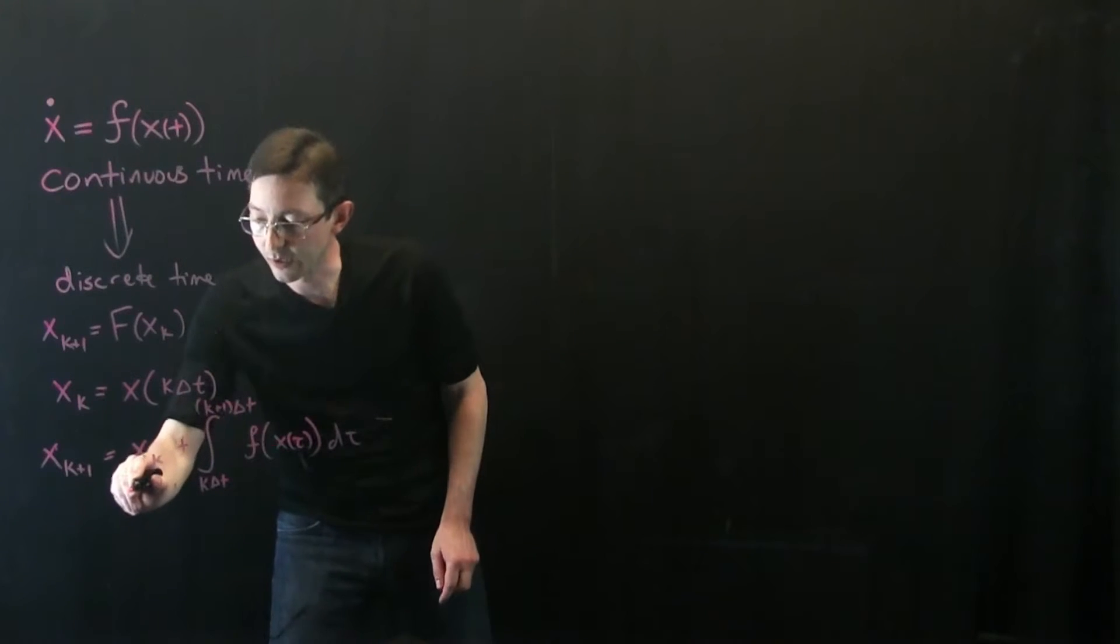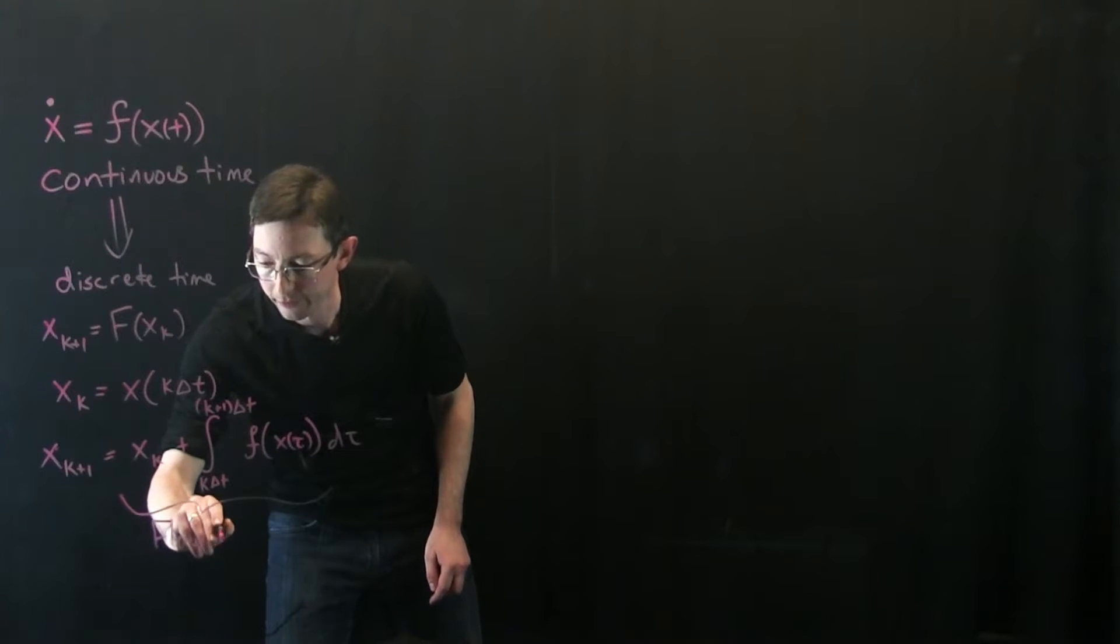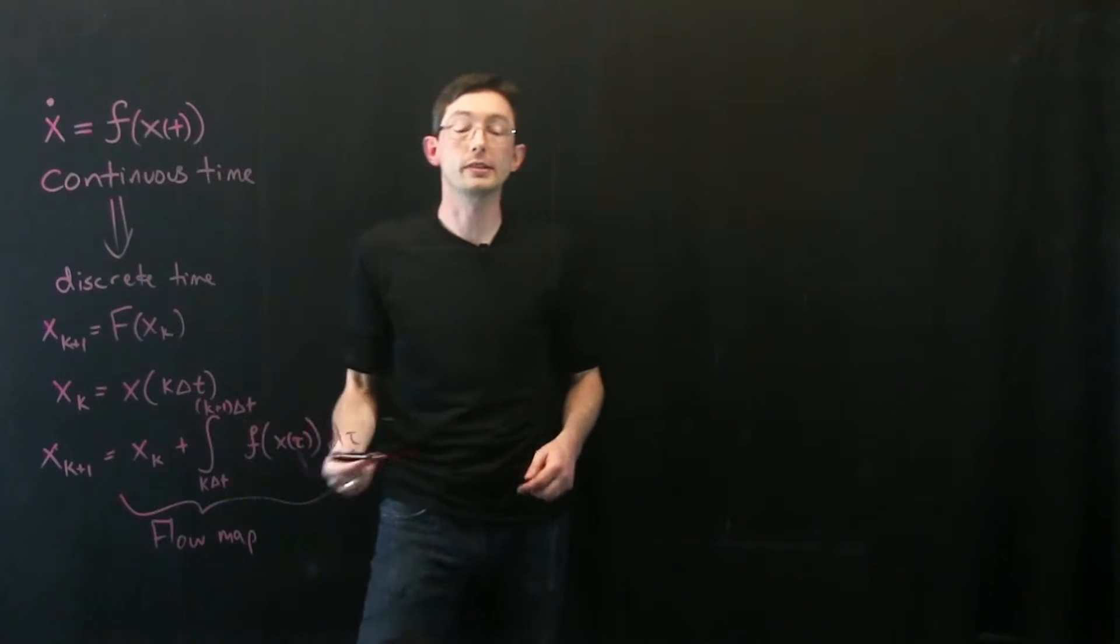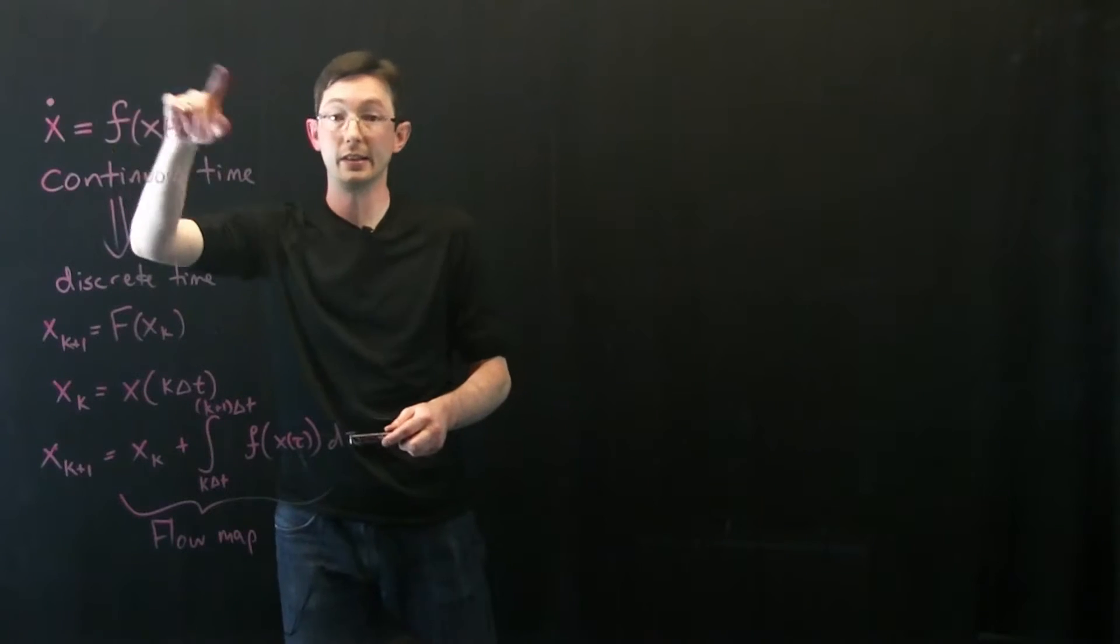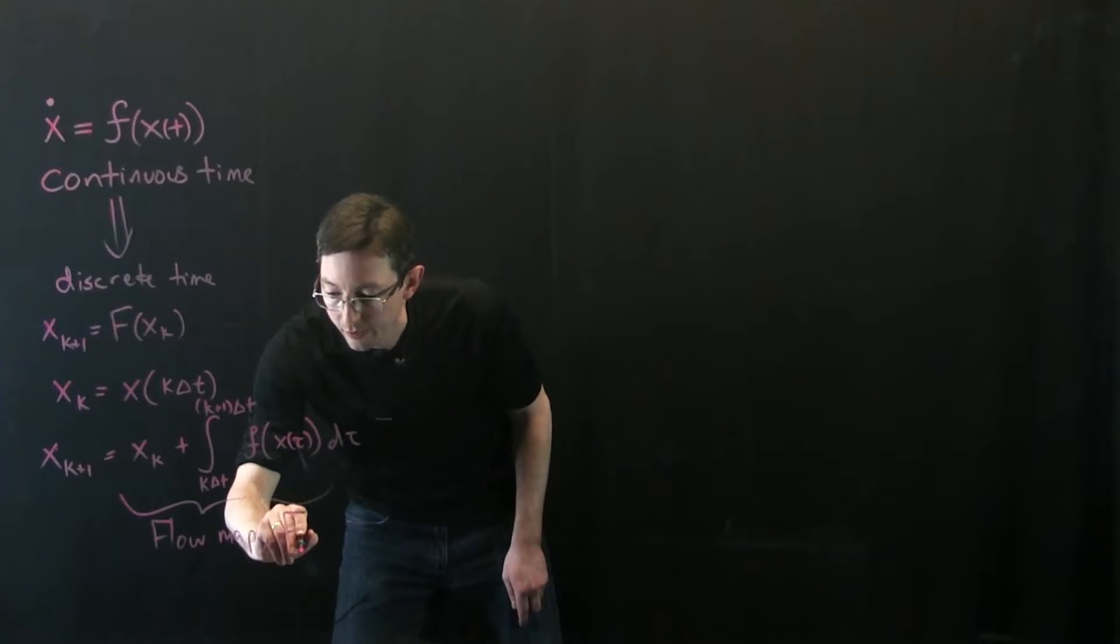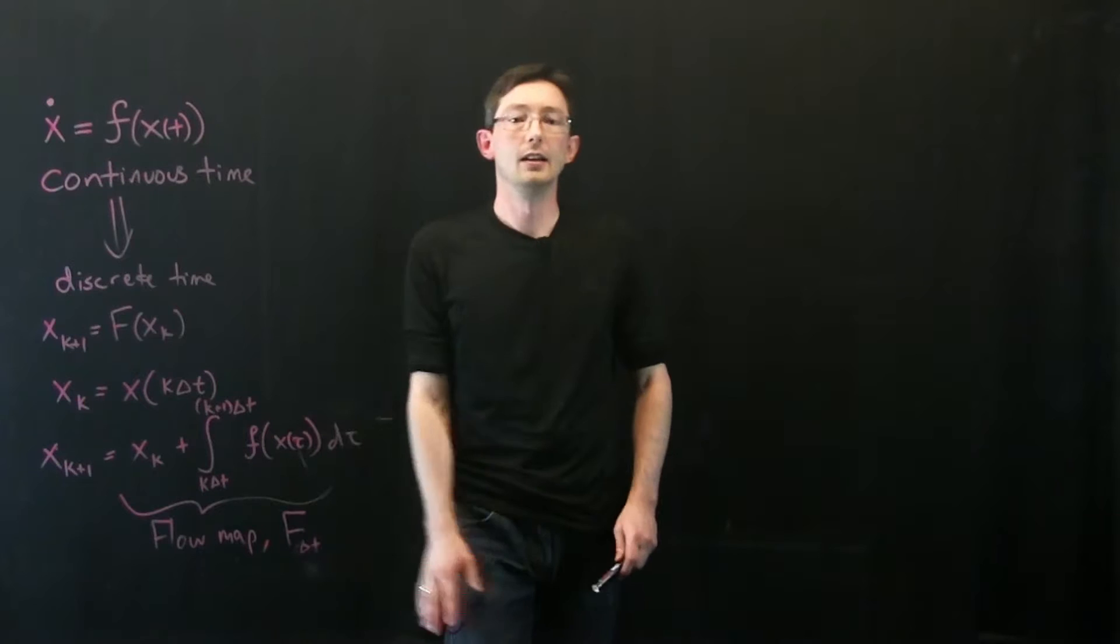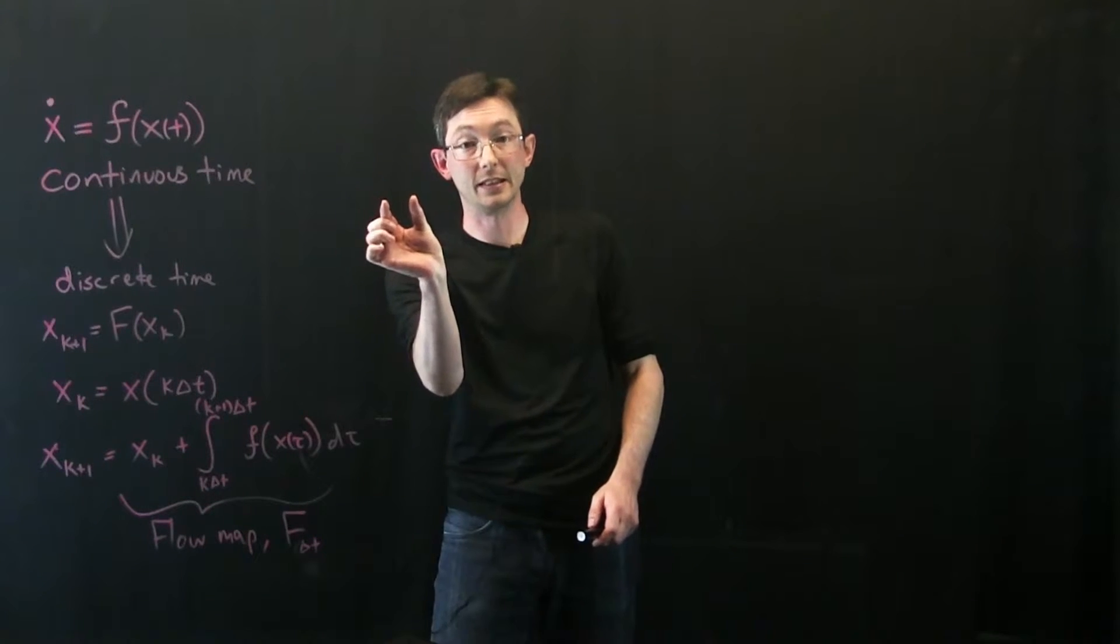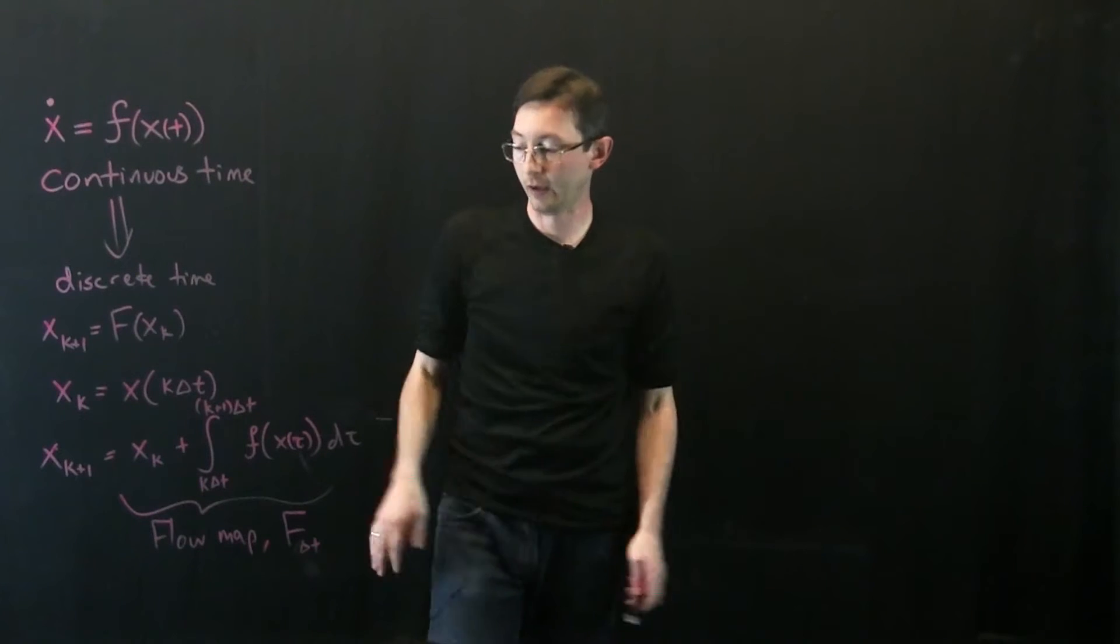So oftentimes we call this the flow map. This flows my state from one time into the future according to this differential equation and that's called the flow map f. This is my little delta t flow map. So big F delta t as a flow map through delta t and it steps me delta t forward.